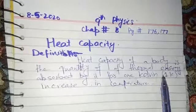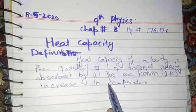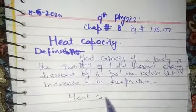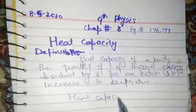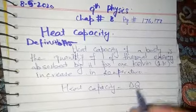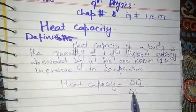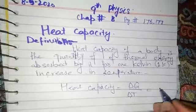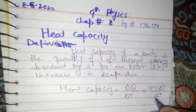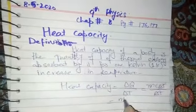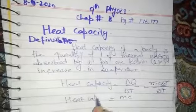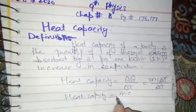The formula of heat capacity is: heat capacity equals the amount of thermal energy absorbed for one Kelvin increase in temperature. By putting in the value Q = mcΔT, the formula of heat capacity becomes mc, where m is the mass and c is the specific heat capacity of a substance.